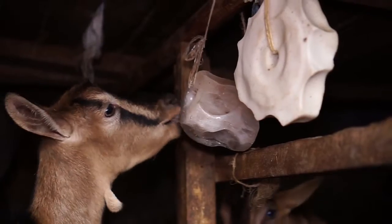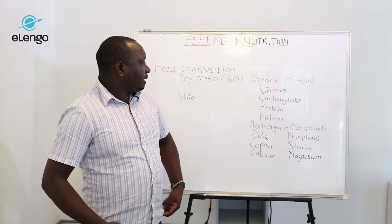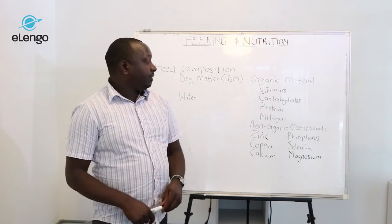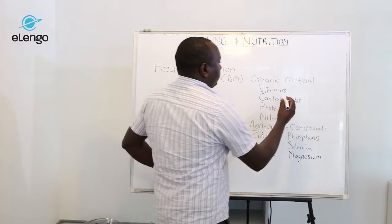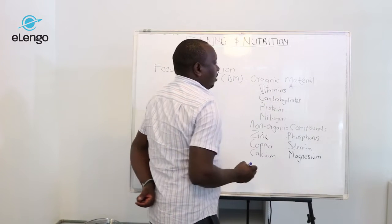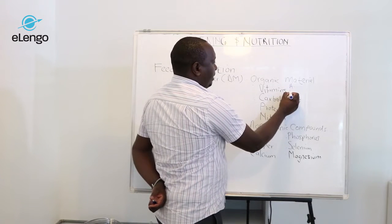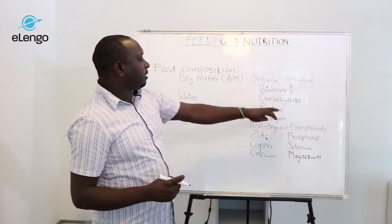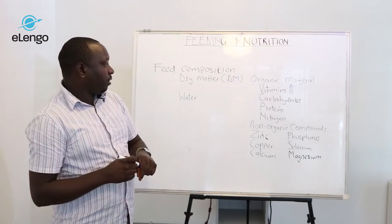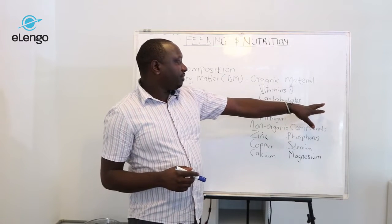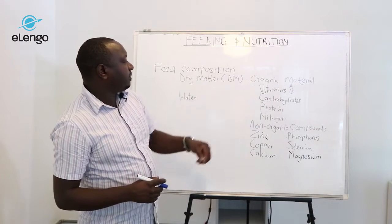The organic material includes vitamins — various types such as vitamin A (also called retinol), vitamin B6, and vitamin B12. We also have carbohydrates, which occur in various forms such as sucrose, fructose, and galactose, among others. Carbohydrates basically give energy to the animal.